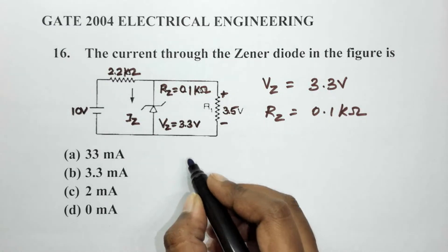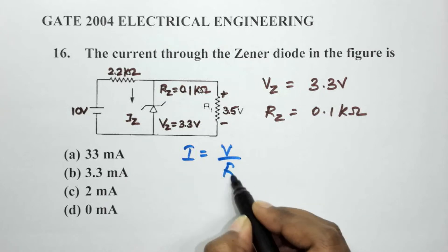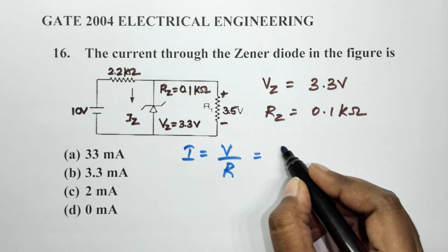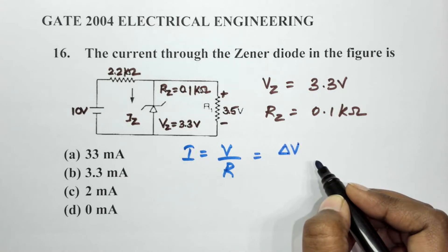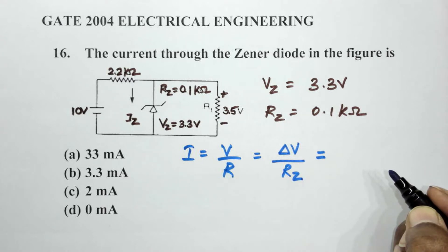We can say that the current is equal to V by R, we know that. So in terms of Zener diode, Iz would be equal to the difference in the voltages, delta V, divided by Rz.